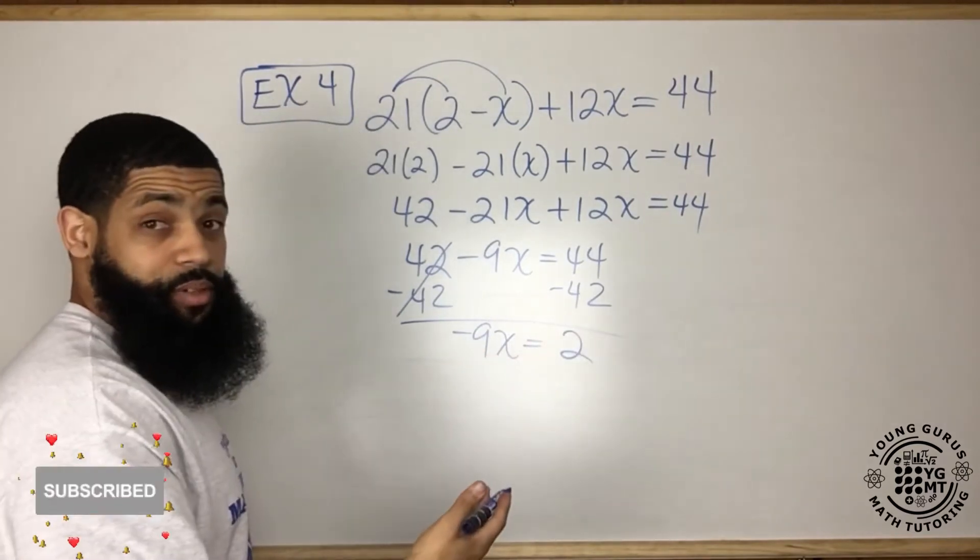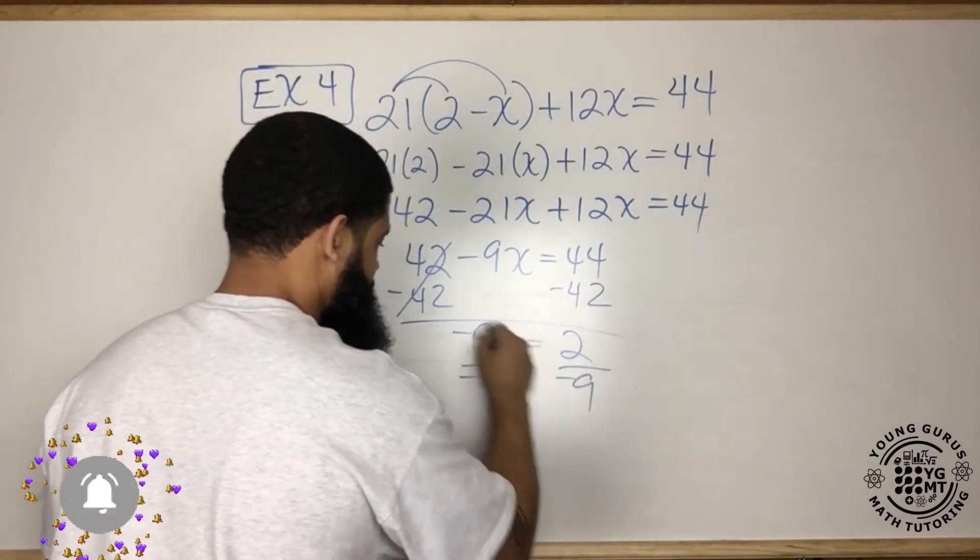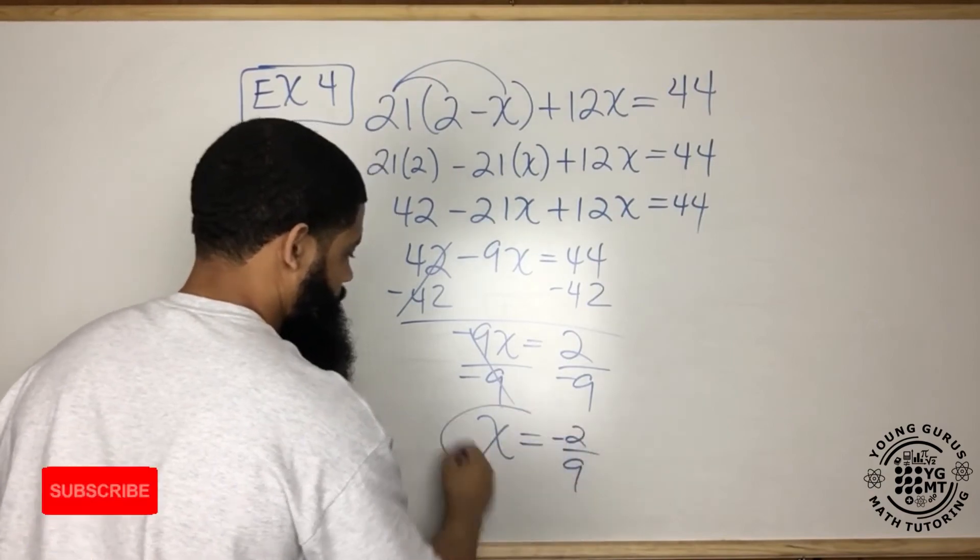Opposite of multiplying by negative 9 is dividing by negative 9. Divide by negative 9, divide by negative 9. x equals negative 2 over 9.